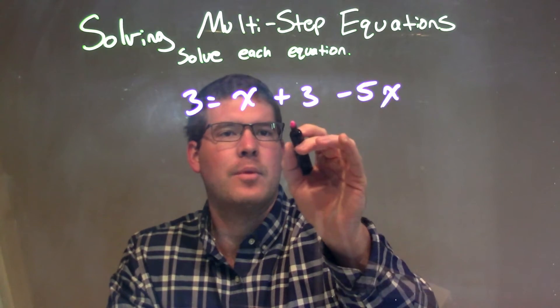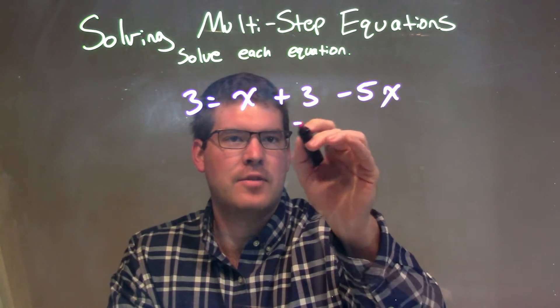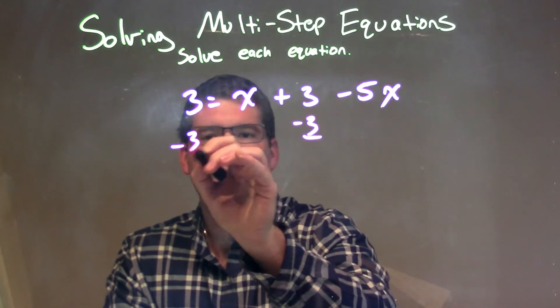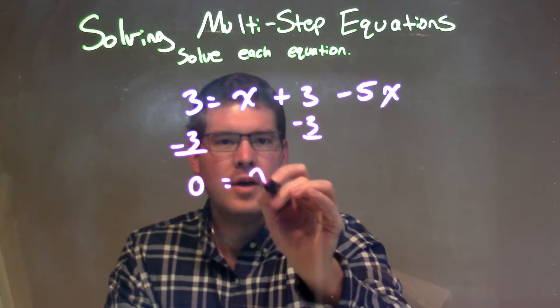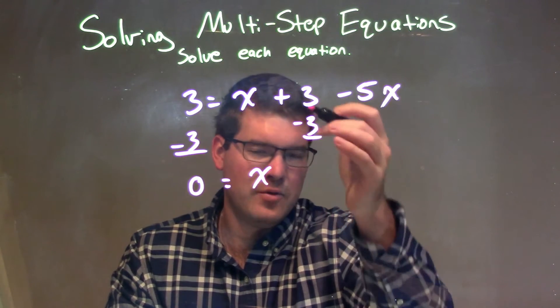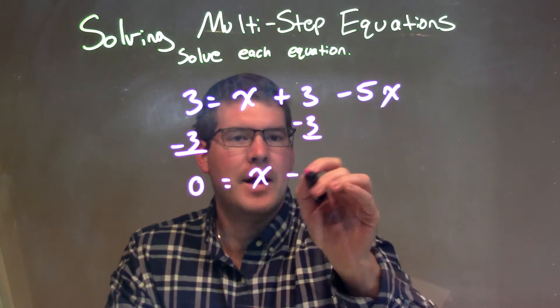I'm going to subtract 3 to both sides. So I'm going to bring my only number here on the right-hand side and subtract it to both sides. It's opposite addition and subtraction. 3 minus 3 is just 0. So we have a 0 there equals x. This disappears, 3 minus 3 disappears, 0, minus 5x.